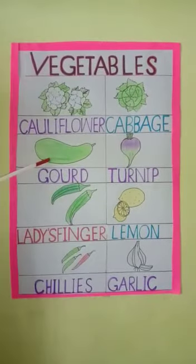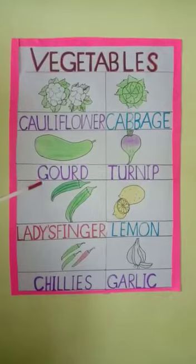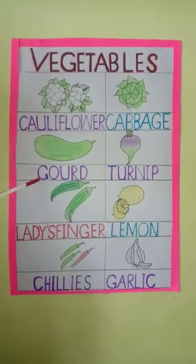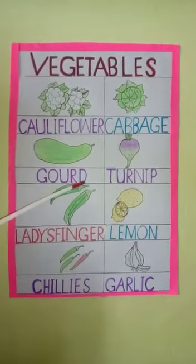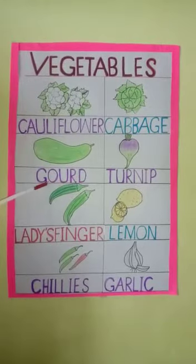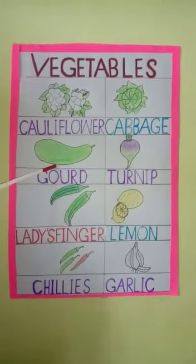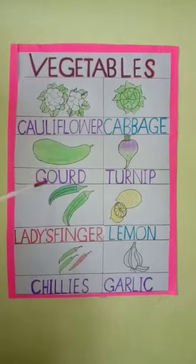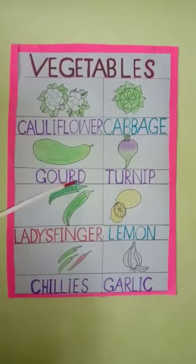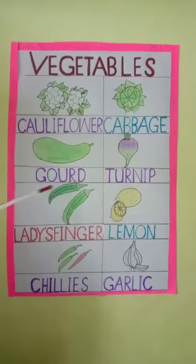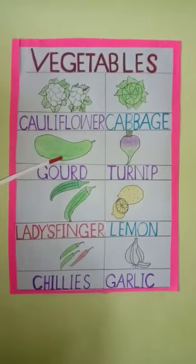This is gourd. Say the spelling: G O U R D. Gourd. What is the spelling of gourd? G O U R D. It is green in color.